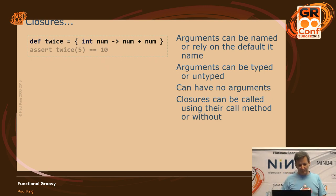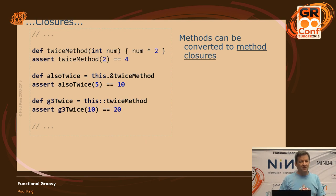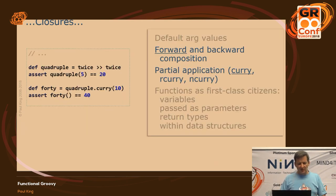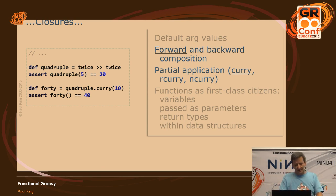If you've already got a bunch of methods and you want to turn them into more closure-like functional style things, method closures are a good option. You can use the dot-ampersand operator to convert a method into a closure, or if you're on Groovy 3, you can use the double colon, similar to what Java lets you do for method references. There's forward and backward composition — you can combine closures — and partial application with the curry function, rcurry, ncurry, and more. You've got full first-class citizens: you can pass closures as parameters and put them in data collections.